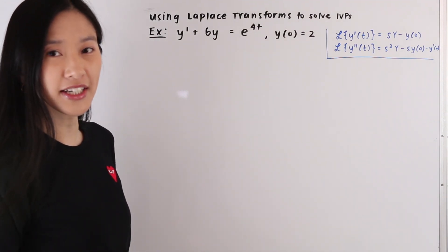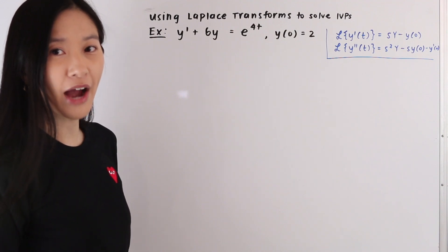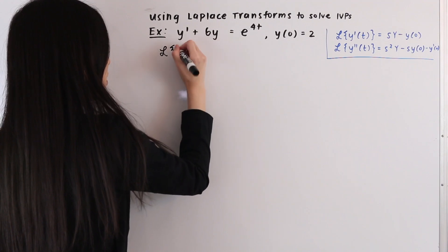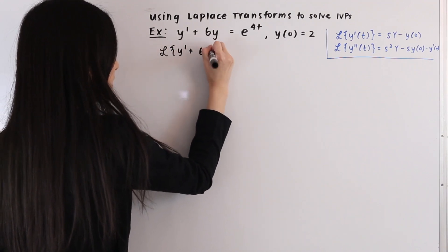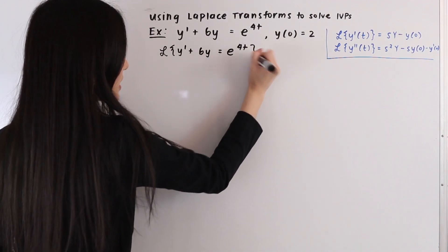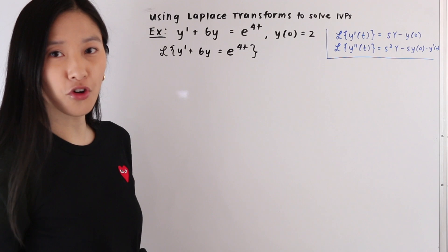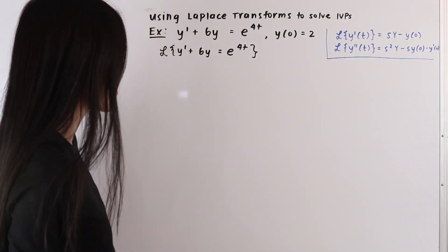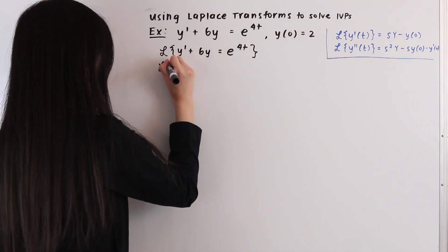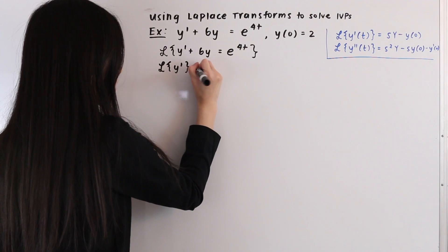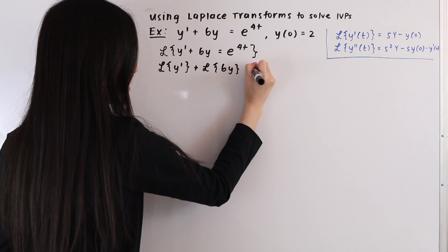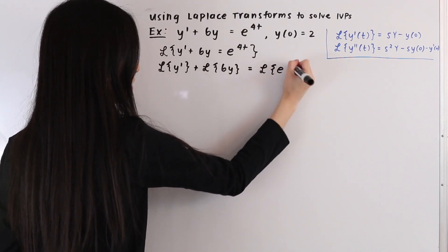As our first step, we are going to take the Laplace transform of both sides of our differential equation. So we have the Laplace transform of y' + 6y equals the Laplace transform of e^(4t). Because the Laplace transform is a linear transform, we can take the Laplace transform of each term separately.